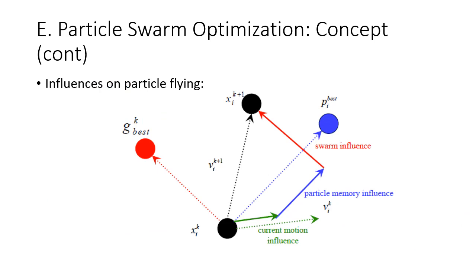This diagram shows how several factors influence the movement of a particle. We have global best — the best solution found so far in the flock — personal best — the best solution found by the particle itself — and also the current velocity or current motion. According to the current velocity, this is where the particle is heading; however, the next movement will be influenced by the memory of its personal best and the global best, so at t plus one this will be the new location of the particle.